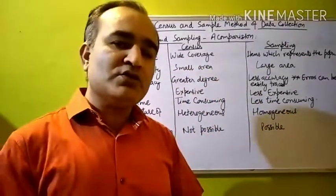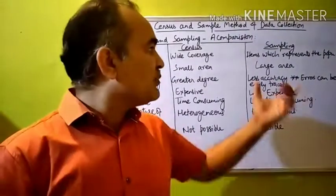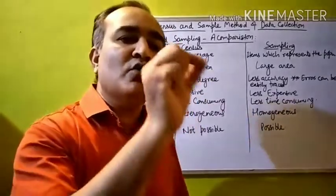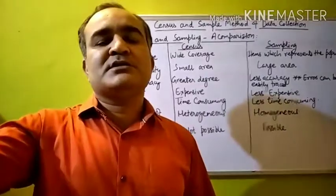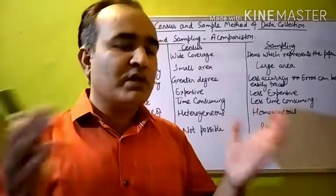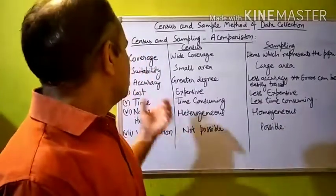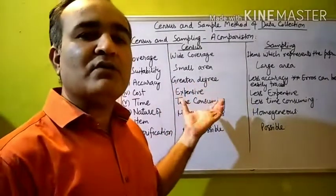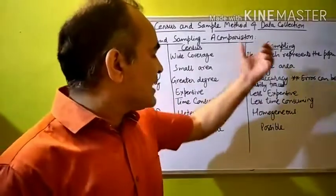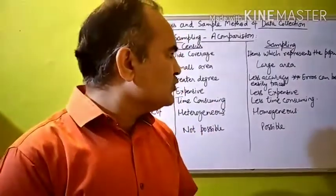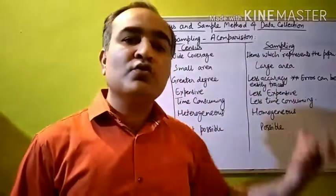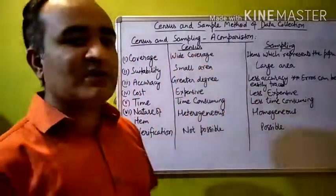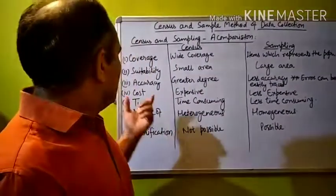Regarding suitability, the census method is suitable for small areas and the sampling method is suitable for large areas — because with a large population we don't cover the entire population, so we pick fixed sample items and perform the investigation. The third criteria is accuracy: in census method the information accuracy is high, while in sampling method the data is less accurate and reliable, but if there is an error it can be easily traced out. In census method, errors are very difficult to trace.